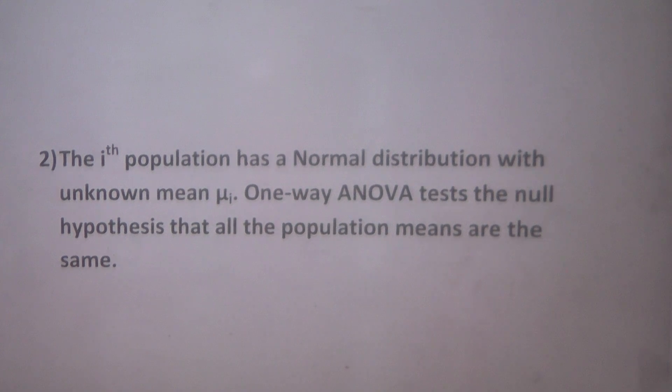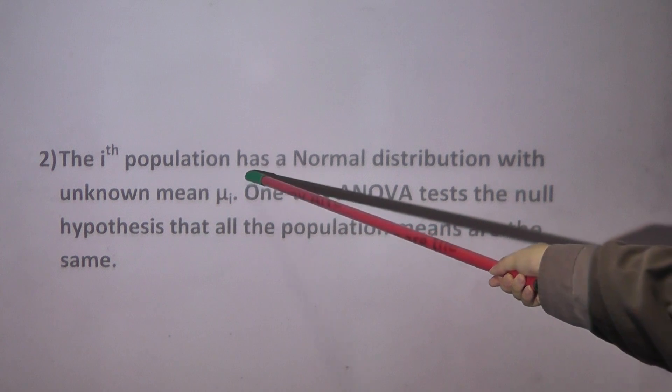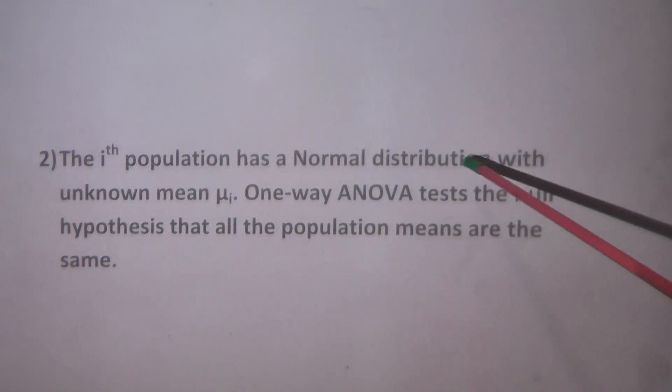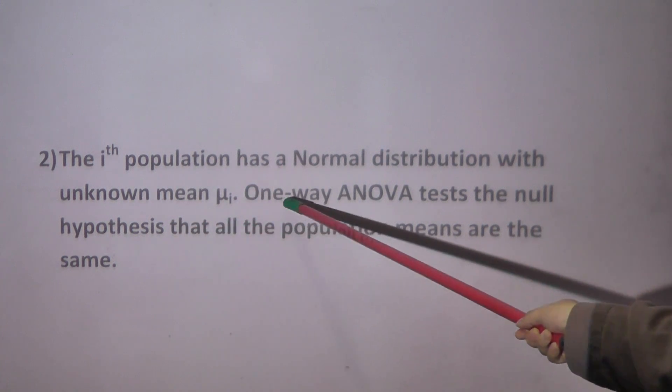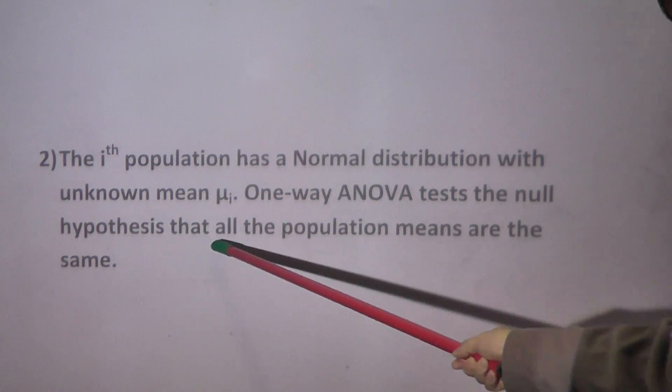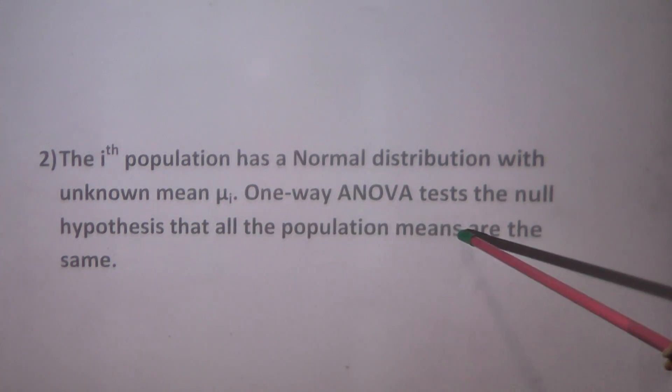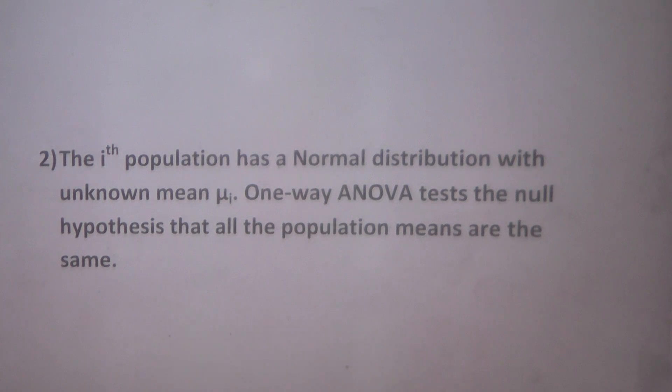Next, the I-th population has a normal distribution with unknown mean mu_i. One-way ANOVA tests the null hypothesis that all the population means are the same. And what does that mean?